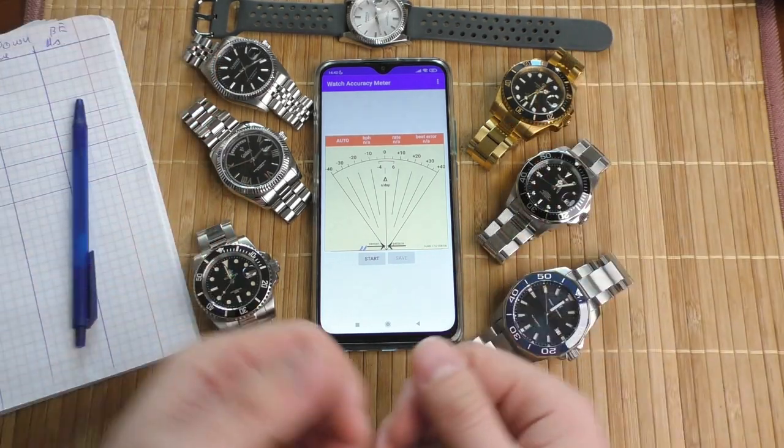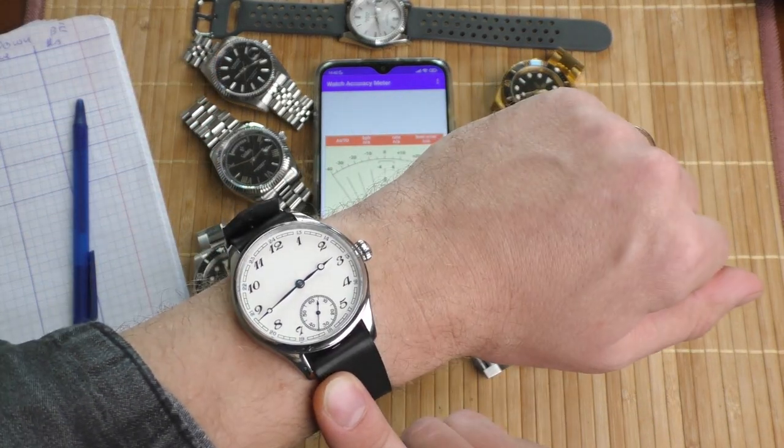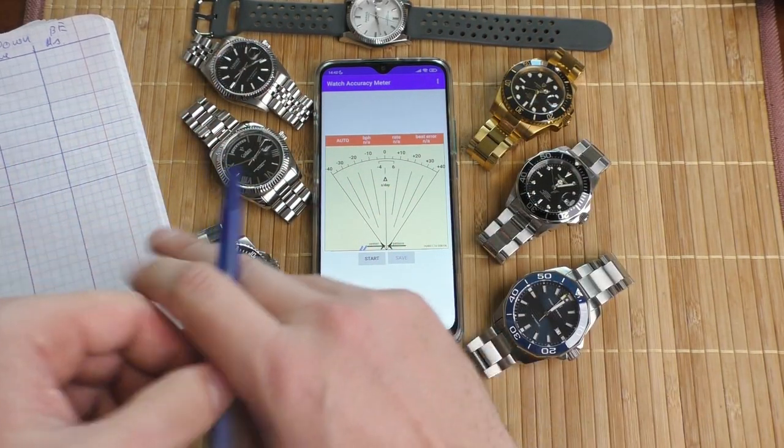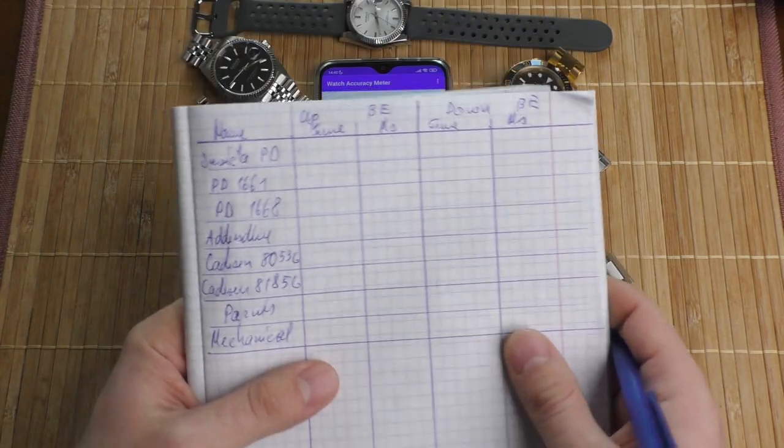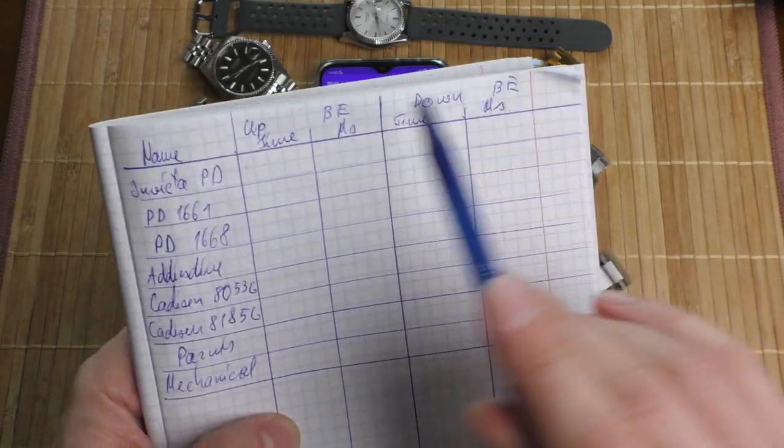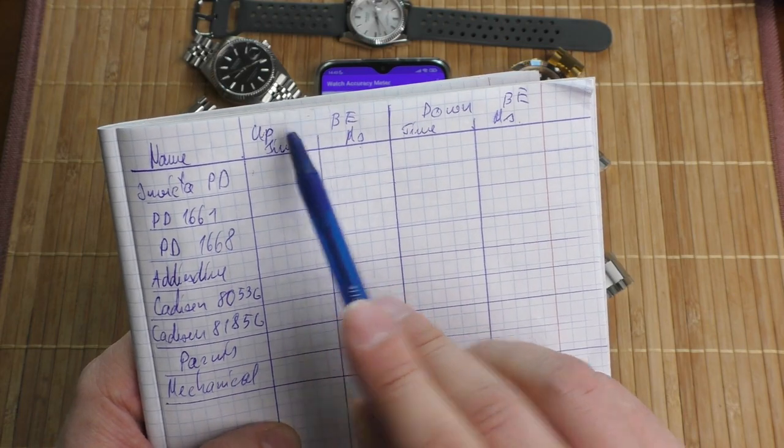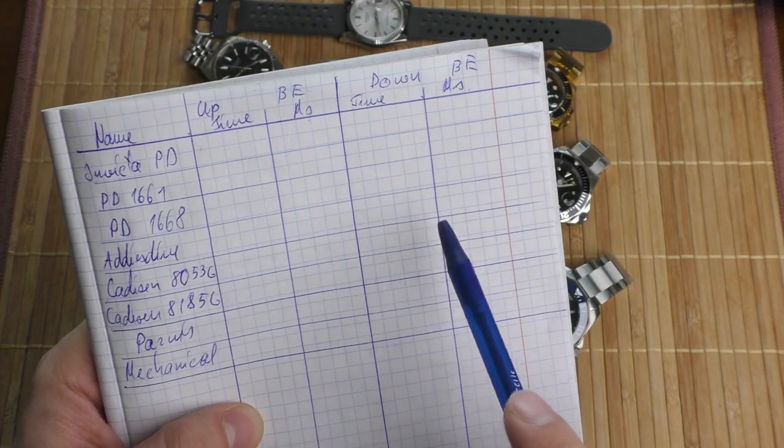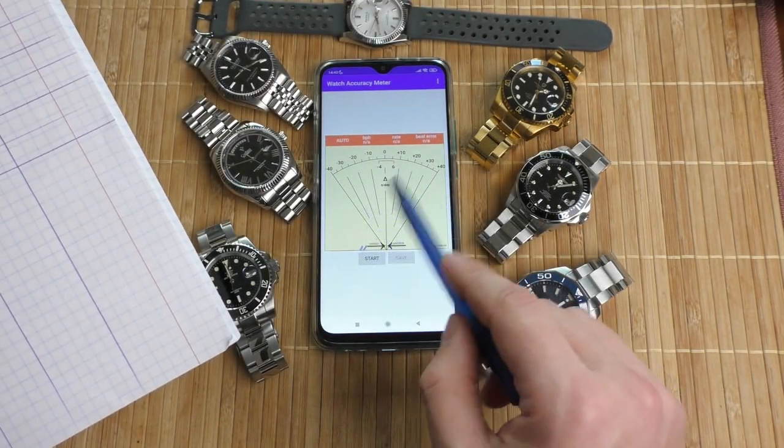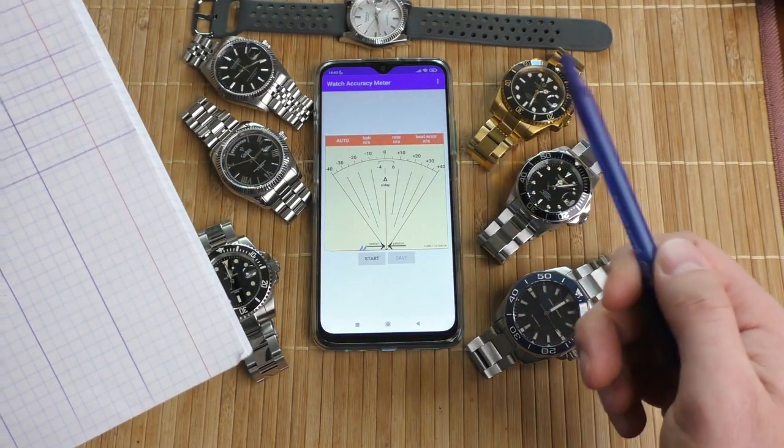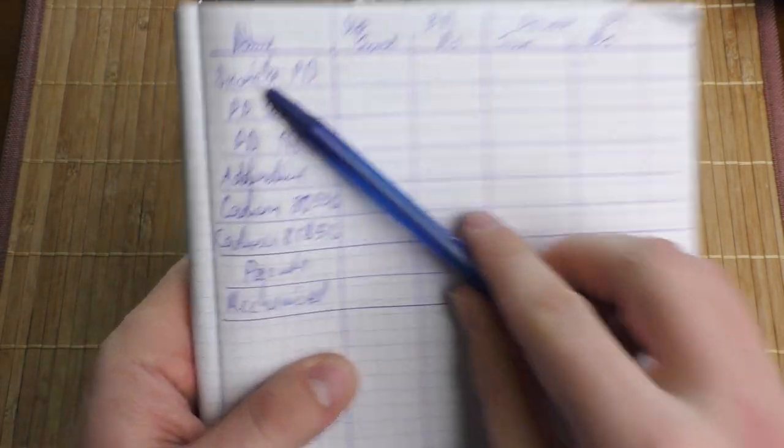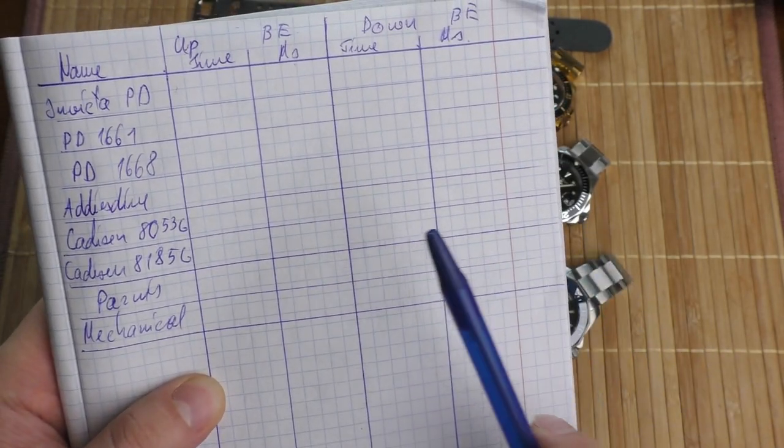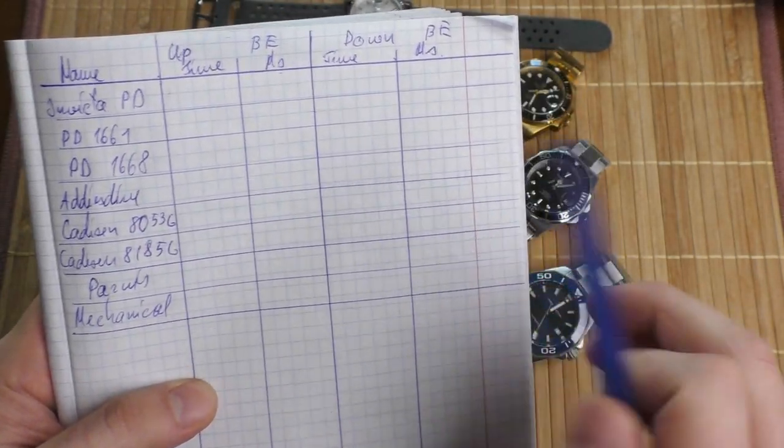Right now I have a bunch of automatic watches and one fully mechanical watch. They are all fully wound and let's see what results we're gonna get. I also made this little table. Let's fill this table in. This is the watch facing up time beat error, the watch facing down time beat error. I'm not gonna wait full minute to get the results. Let's just have fun and if you wanna see the results, skip to the end of the video and I will show you the full table filled.